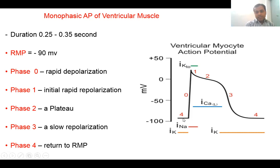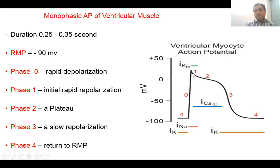Phase zero is rapid depolarization — the potential rises very fast because of the opening of rapid sodium channels allowing rapid influx of sodium ions, driving the potential towards positivity. Phase one follows: after reaching above zero, there is a brief initial repolarization because the sodium channels are getting closed, and at the same point potassium channels open causing a slow efflux of potassium ions, resulting in initial rapid repolarization.